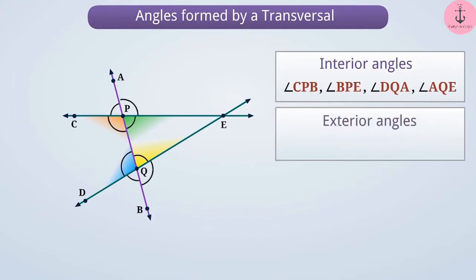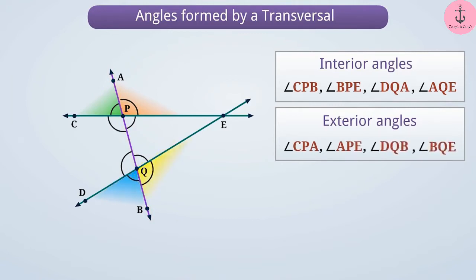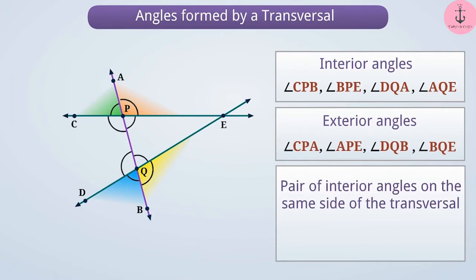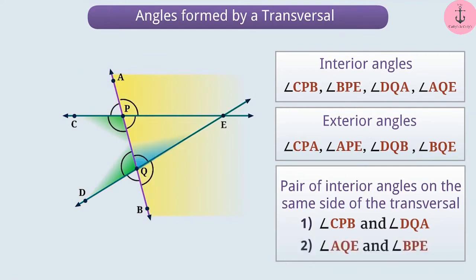The exterior angles formed by transversal AB are angle CPA, angle APE, angle DQB, and angle BQE. The pairs of interior angles on the same side of the transversal are: angle CPB and angle DQA, and the other pair is angle AQE and angle BPE.